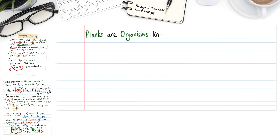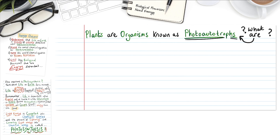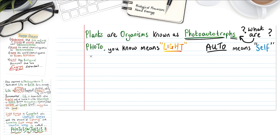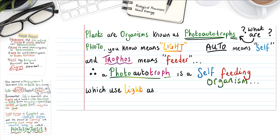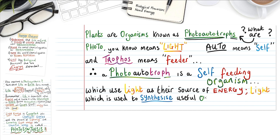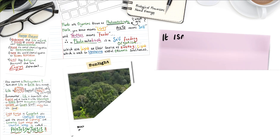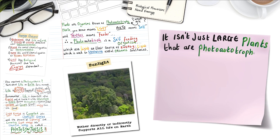Plants are organisms known as photoautotrophs. You know that photo means light, and auto means self. The term trophos means feeder. Therefore, a photoautotroph is a self-feeding organism. Photoautotrophs use light as their source of energy, which is used to synthesize useful organic substances. And it isn't just large plants that are photoautotrophic either.